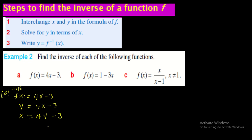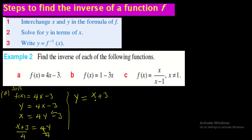Now make y the subject. Add 3 to both sides: x + 3 = 4y. Divide both sides by 4: y = (x + 3)/4. This y — obtained after exchanging — is the inverse. Therefore f⁻¹(x) = (x + 3)/4. That is the inverse of the first function.